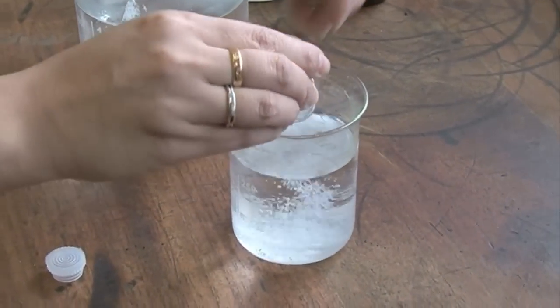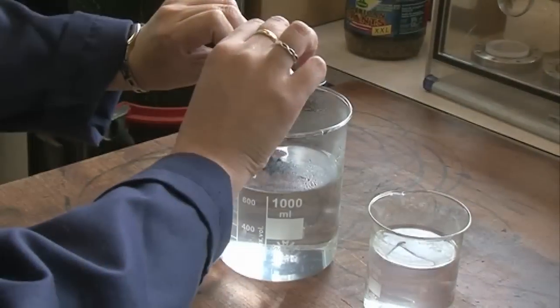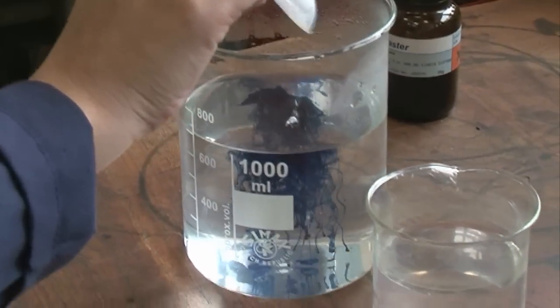Today we're going to be doing a color change reaction involving solids going into liquids, all getting mixed together. By the addition of a dye, we'll be able to see the reaction changing color.